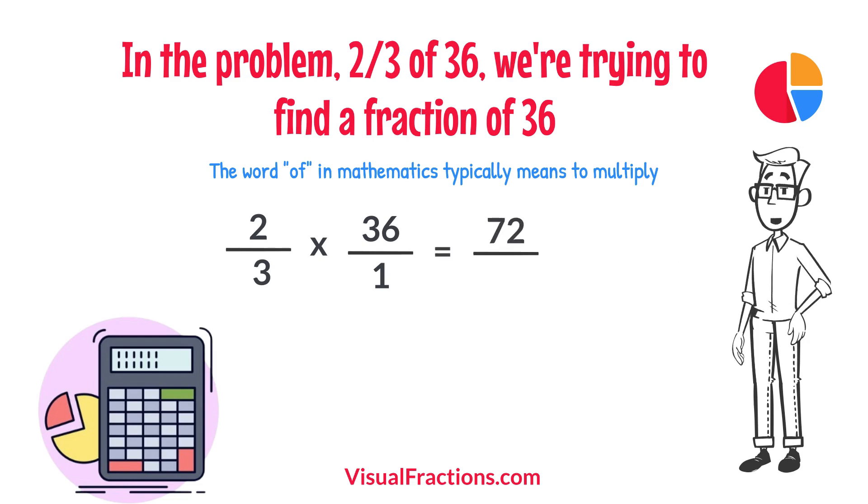Next, multiply the denominators, 1 times 3 equals 3. We now have a new fraction, 72-thirds.